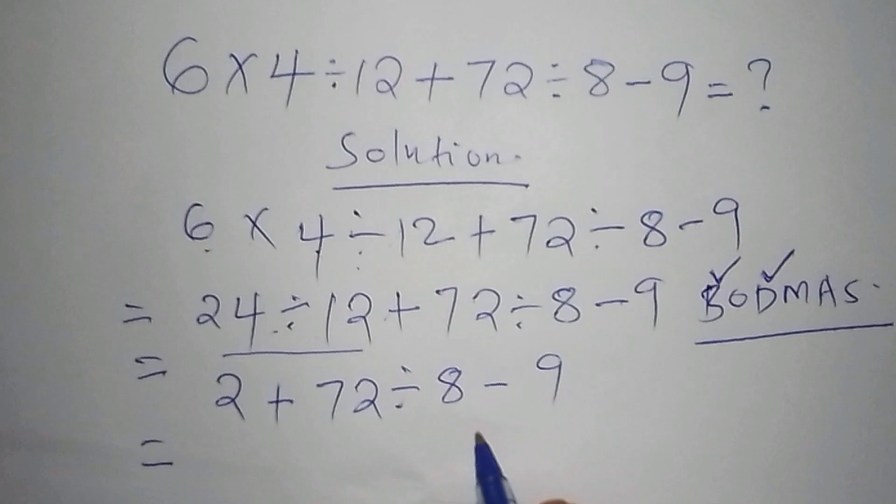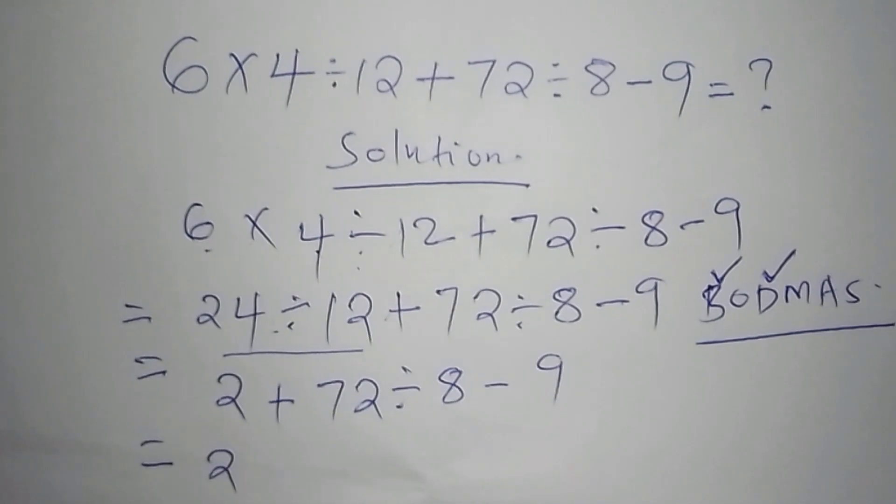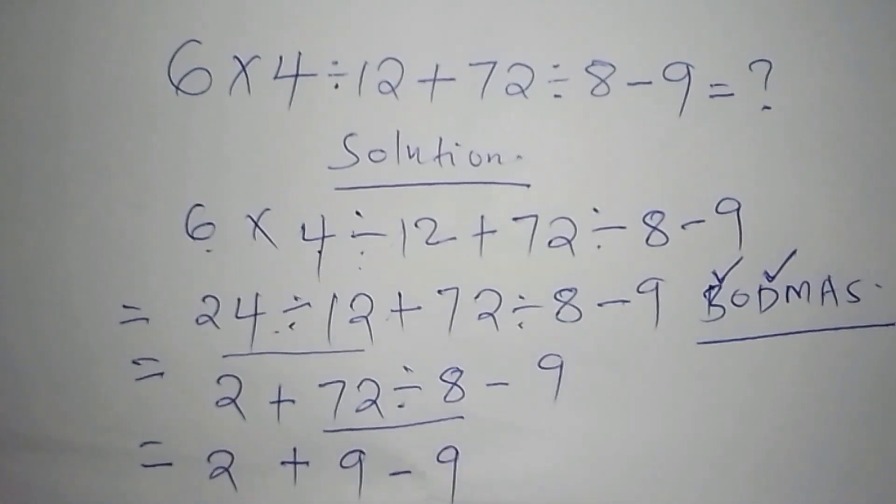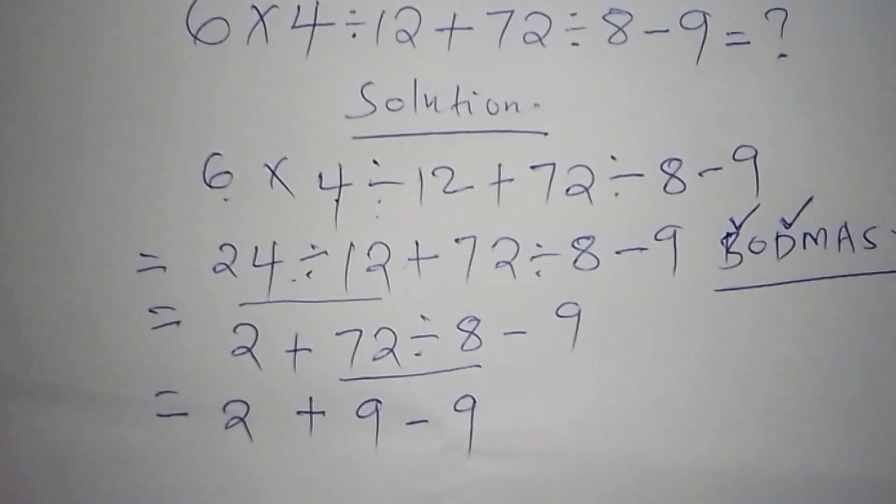So now we shall say, this two will still remain here, 2 plus, we need to work out this 72 divided by 8, so we shall have 9 minus 9. So we are almost completing the problem.